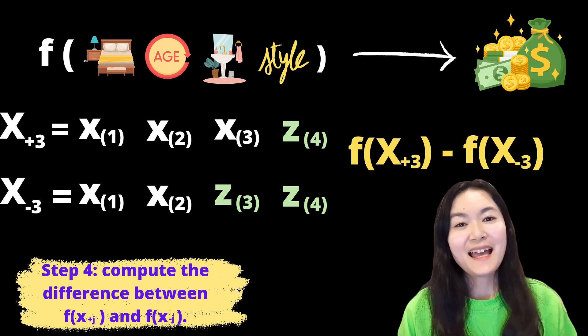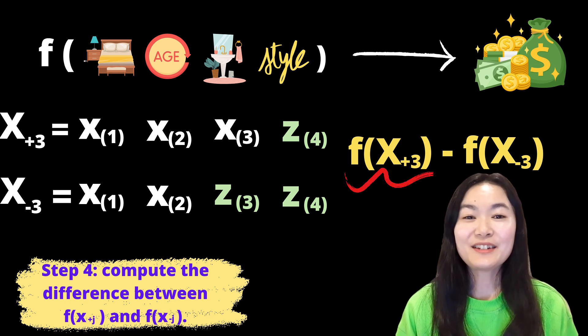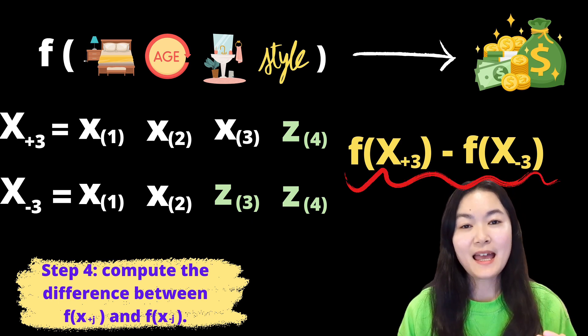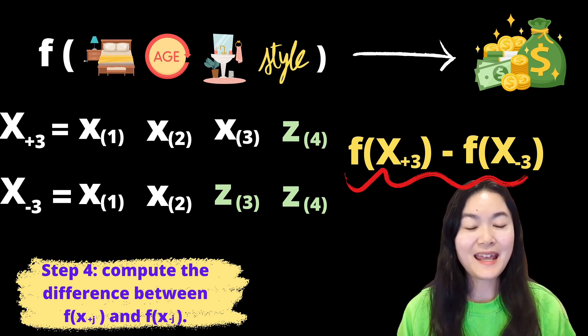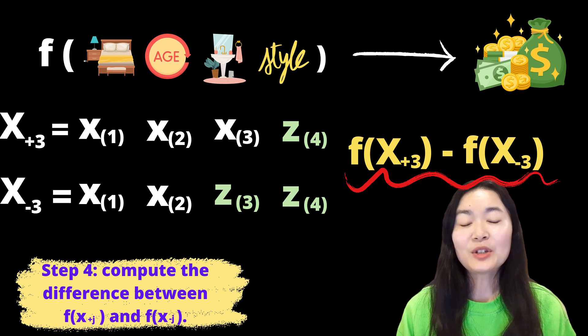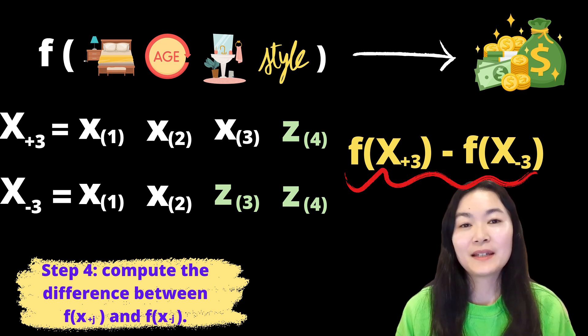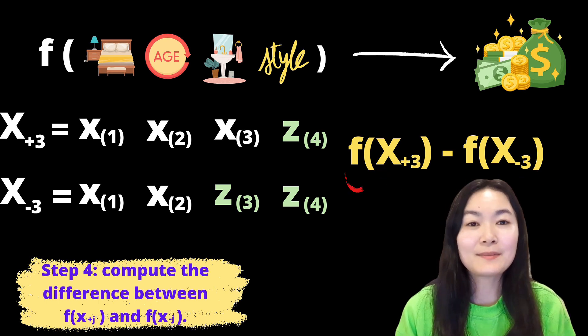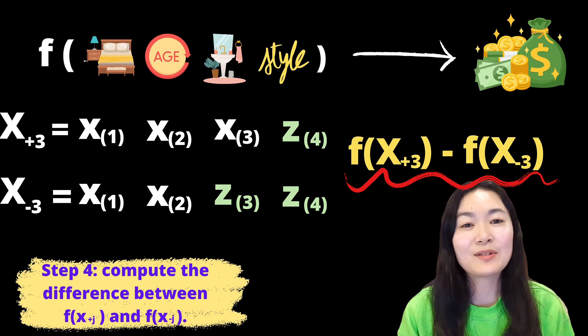Step 4 is to input x-plus-3 and x-minus-3 into the function f and calculate the difference between f(x-plus-3) and f(x-minus-3). This calculates the marginal contribution of the number of bathrooms in this specific combination of house feature values.